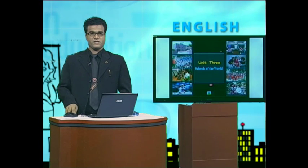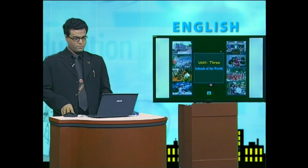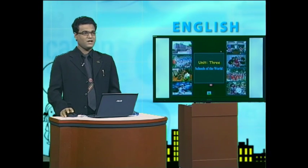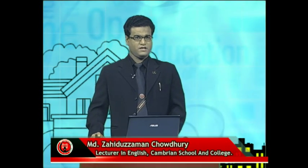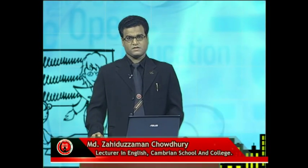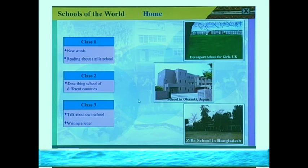Today we will discuss Unit 3: Schools of the World. Let us go through the text. We will learn the characteristics of a Jala school in Bangladesh and also learn about some other foreign schools. On the screen we notice some pictures: Davenport School of Girls from the UK, a school in Okhajaki, Japan, and a Jala school in Bangladesh. Let us start.